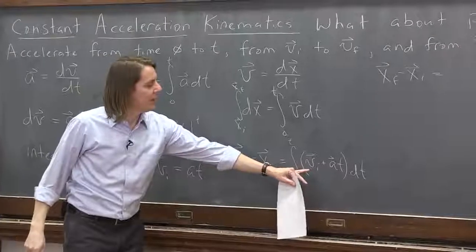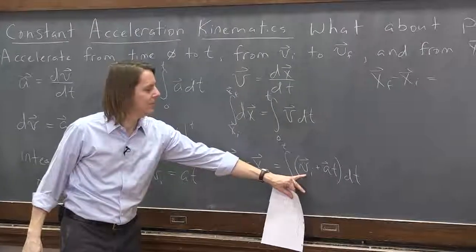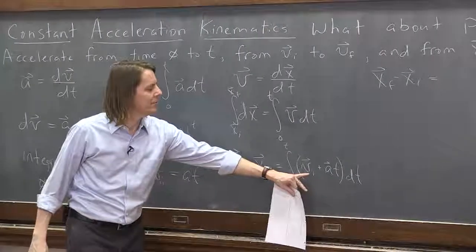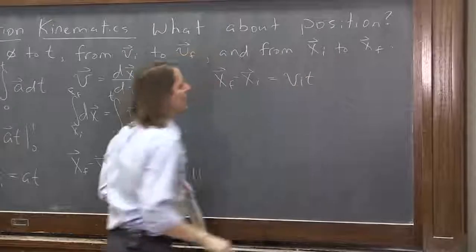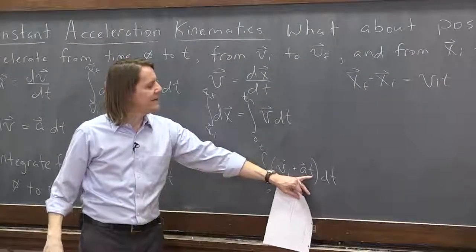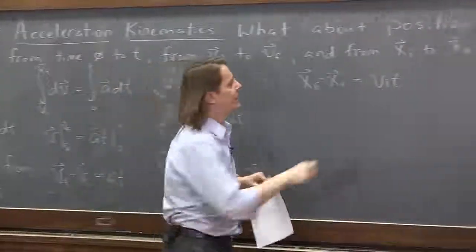Now that is a constant. This velocity, this is the initial velocity. It's not a function of time. It's a constant. So the integral of that is just vi times t. And then plus at. The integral of at is bring the t up to square. Divide by the 2 is 1 half at squared.